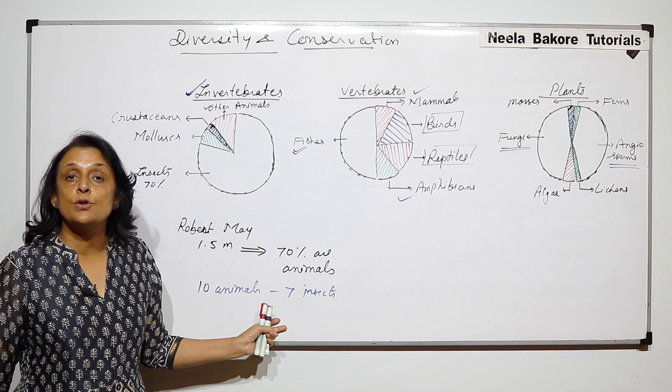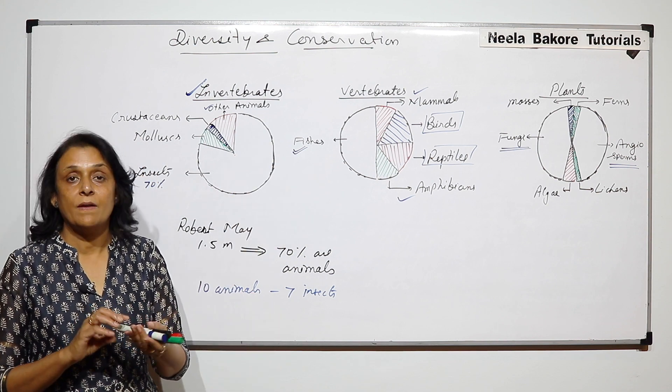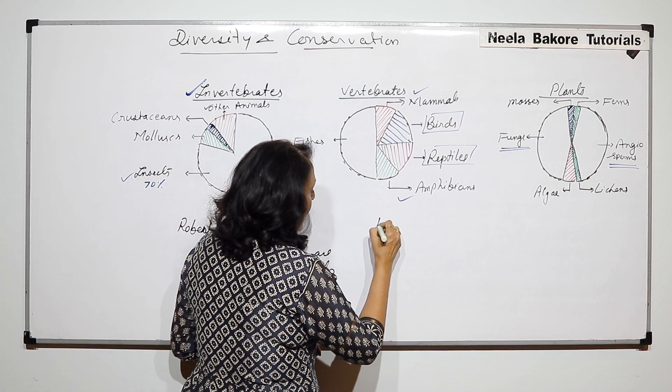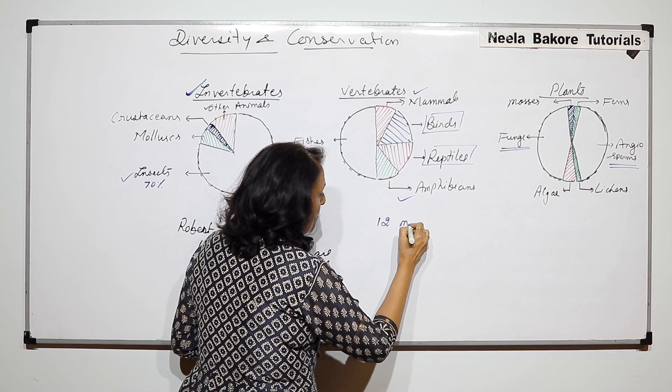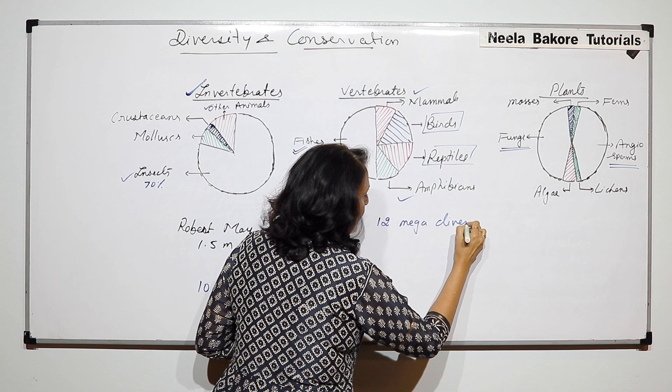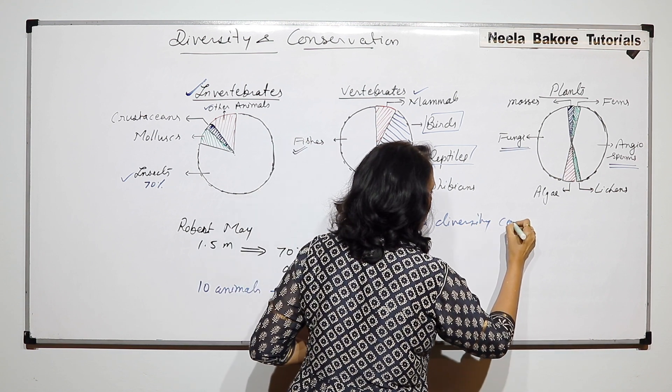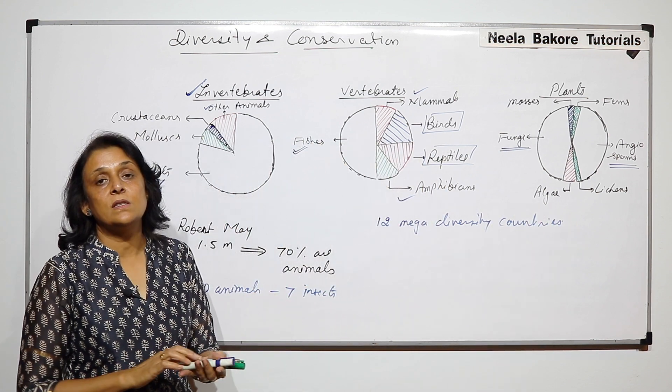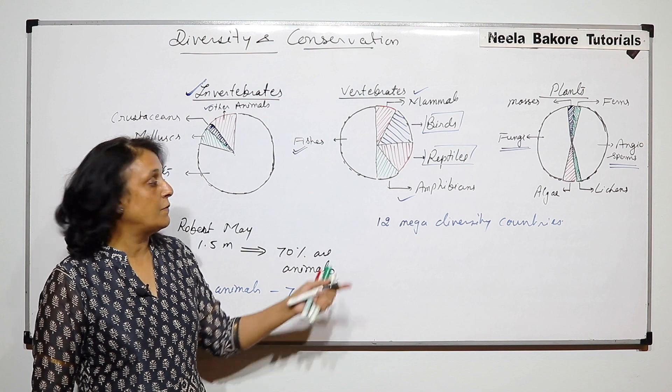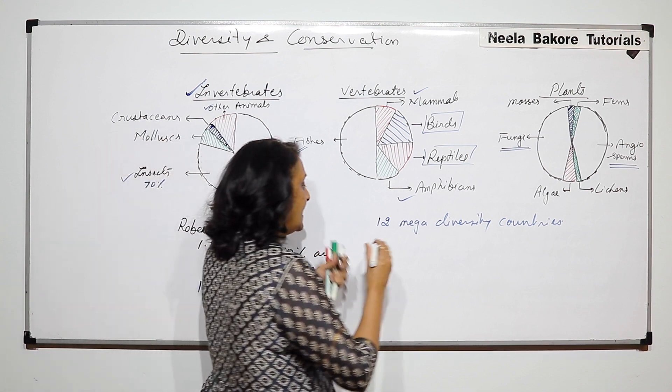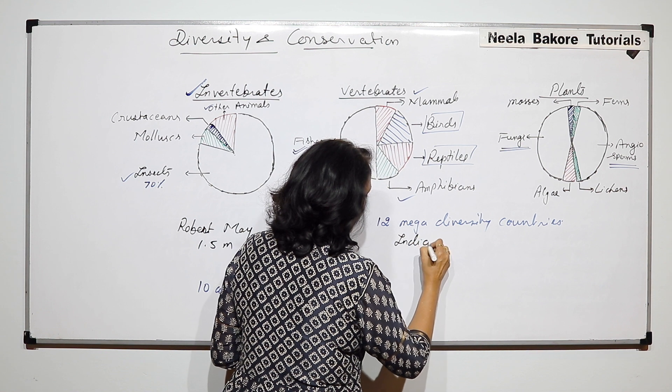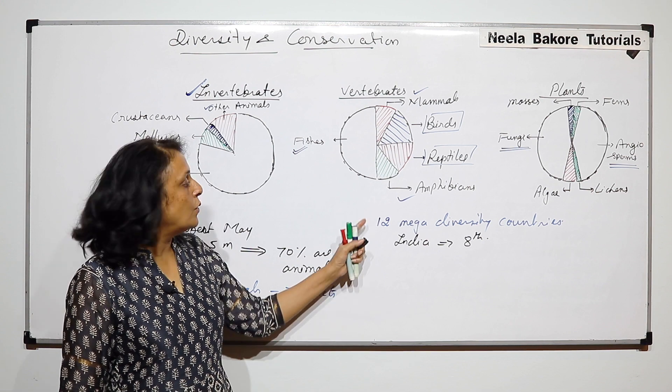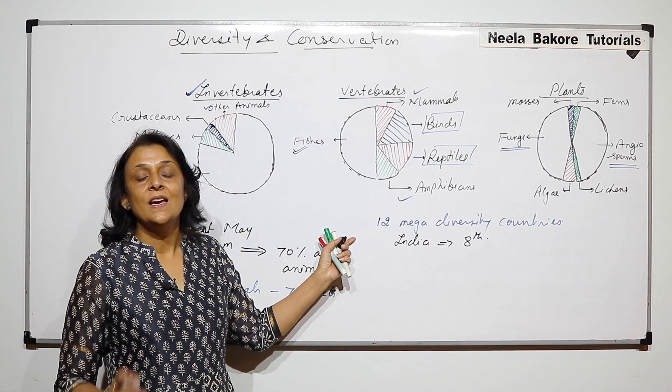This is the distribution of the organisms taking different groups into account. There are 12 mega diversity countries. Mega diversity means there is more species diversity. There are 12 and India is 8th.